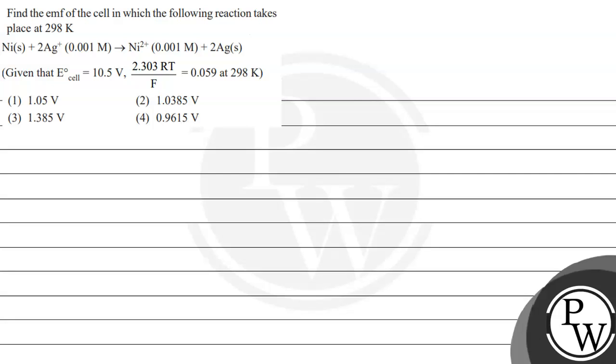Hello Bacho, let's read this question. Find the EMF of the cell in which the following reaction takes place at 298 Kelvin. So this is the reaction given to us: Ni(s) + 2Ag⁺ → Ni²⁺ + 2Ag(s). Given that E°cell equals 1.05 volt and 2.303 RT divided by F equals 0.059 at 298 Kelvin. These are the following options given to us.